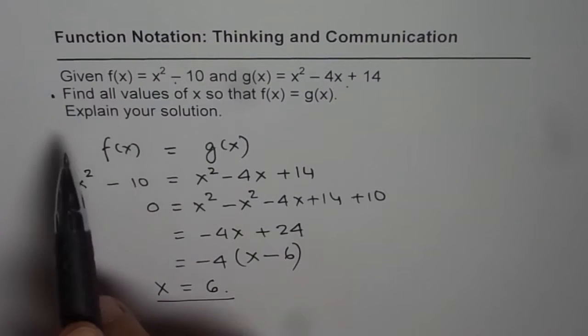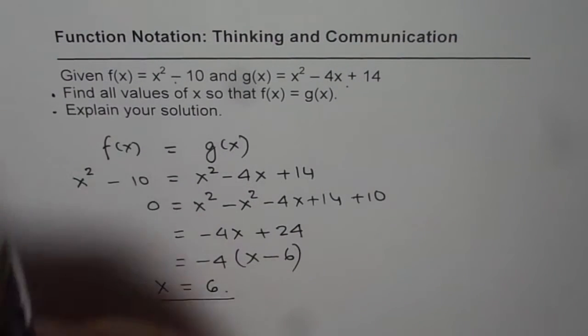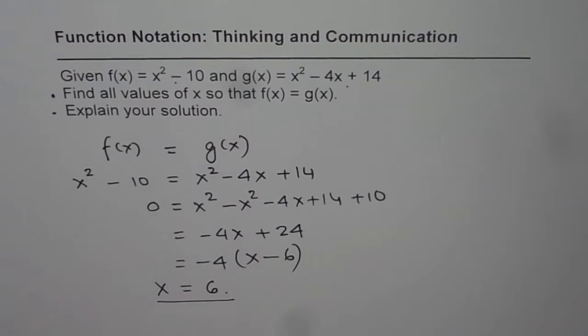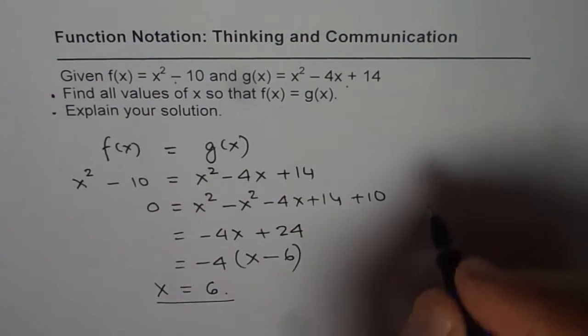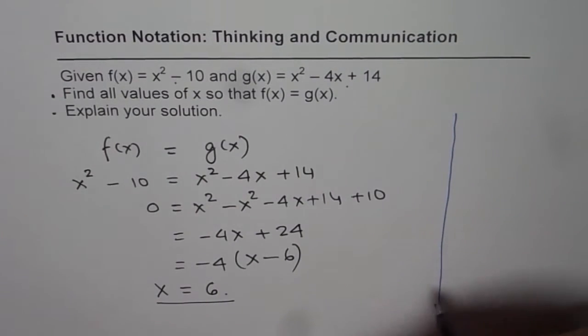Now, explain your answer. What do you really understand by this solution? This solution really means that the point of intersection between these two functions is at x equals 6. So what I am trying to say is kind of like this.